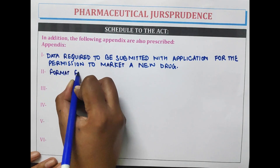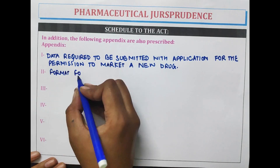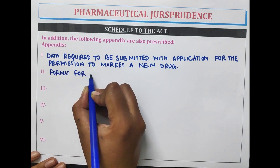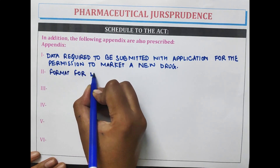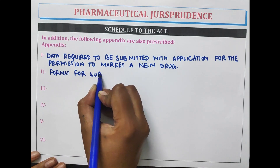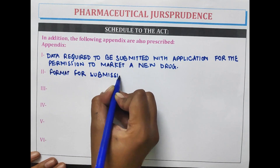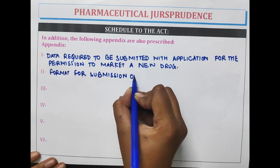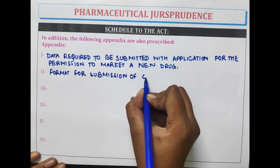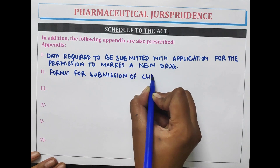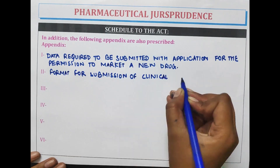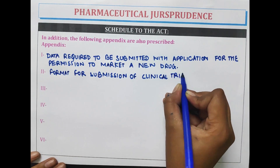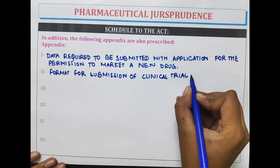Appendix second is the format for the submission of a clinical trial report.